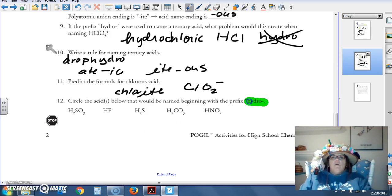Circle the acids below that would begin with the prefix hydro. Hydro, remember, was on the first page. Those are binary. There's no oxygen in there. So is this guy going to be binary? No. Is this guy going to be binary? Yes. Hydrofluoric.